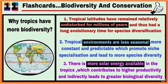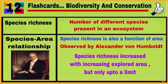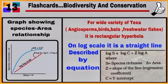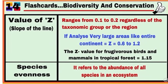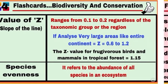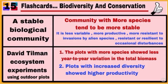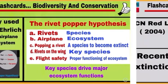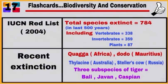Card 11, 12, 13 — Graph showing Species-Area Relationship. Cards 14, 15, 16, 17 — IUCN Red List 2004.